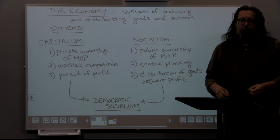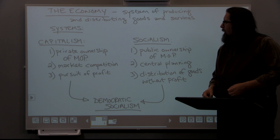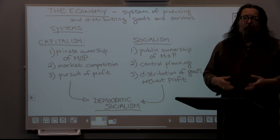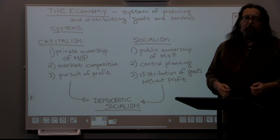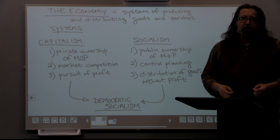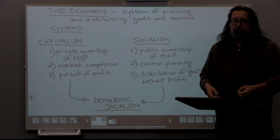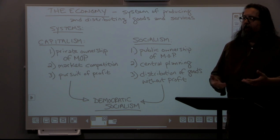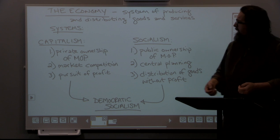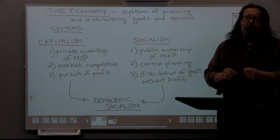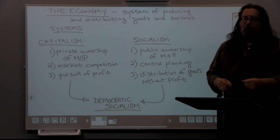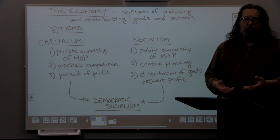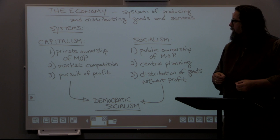When we talk about capitalism, we're talking about an economic system with three main features. The first is private ownership of the means of production — a term largely coming from Marx. The means of production refers to how things get made: on a large scale, things like factories or power plants. In a capitalist society, private ownership means individuals or groups can claim sole ownership over these — a person can own a factory, a shipyard, or a business.